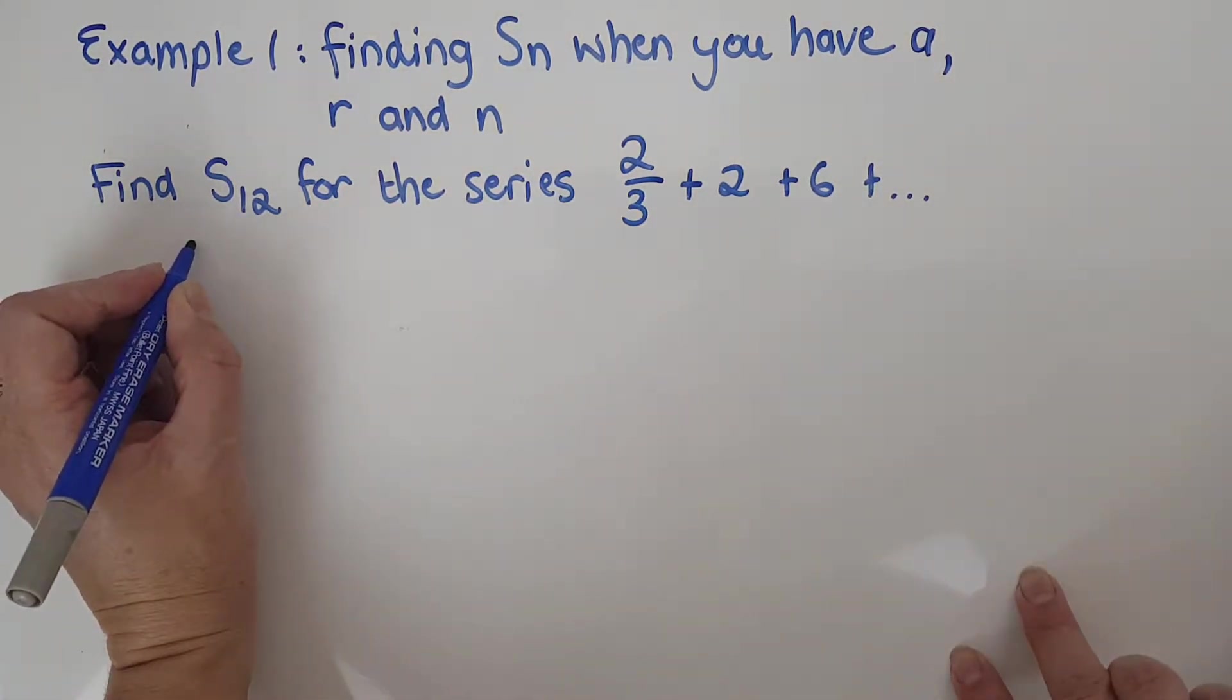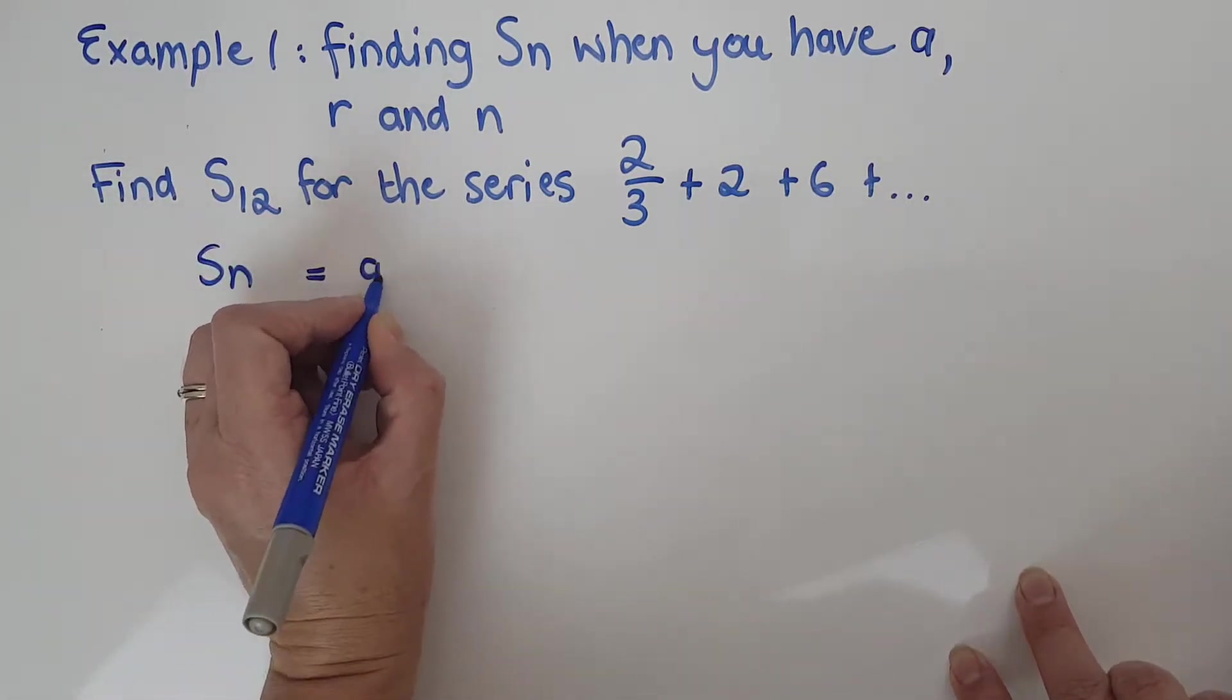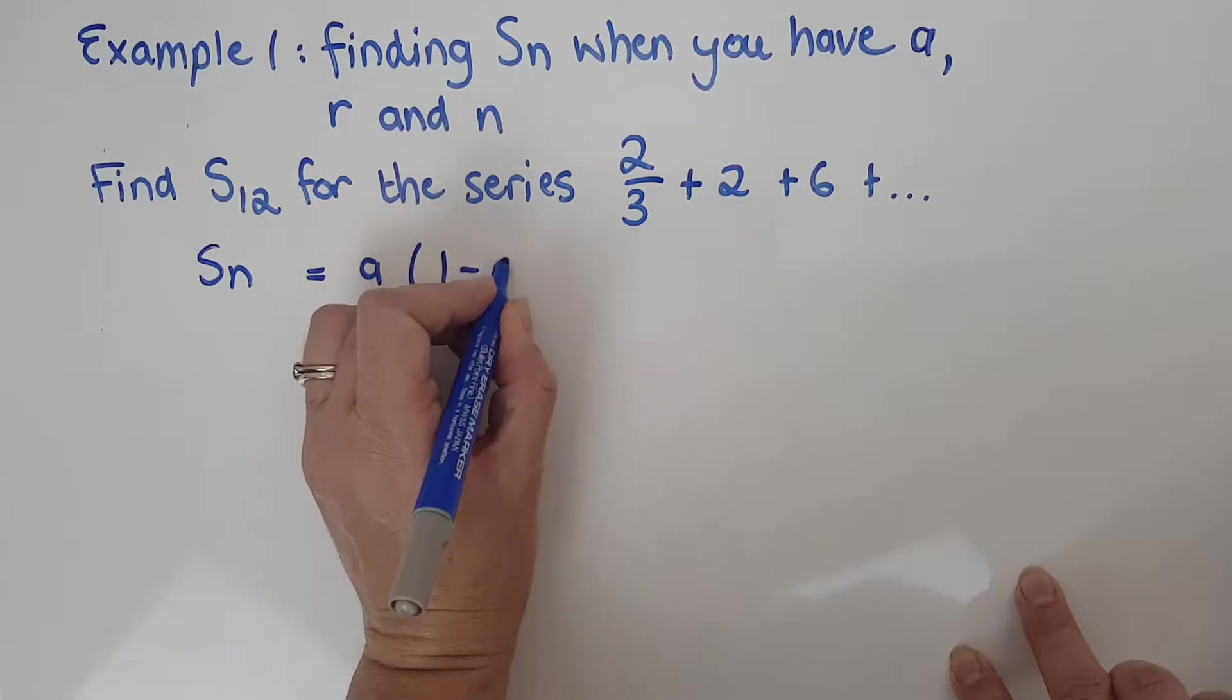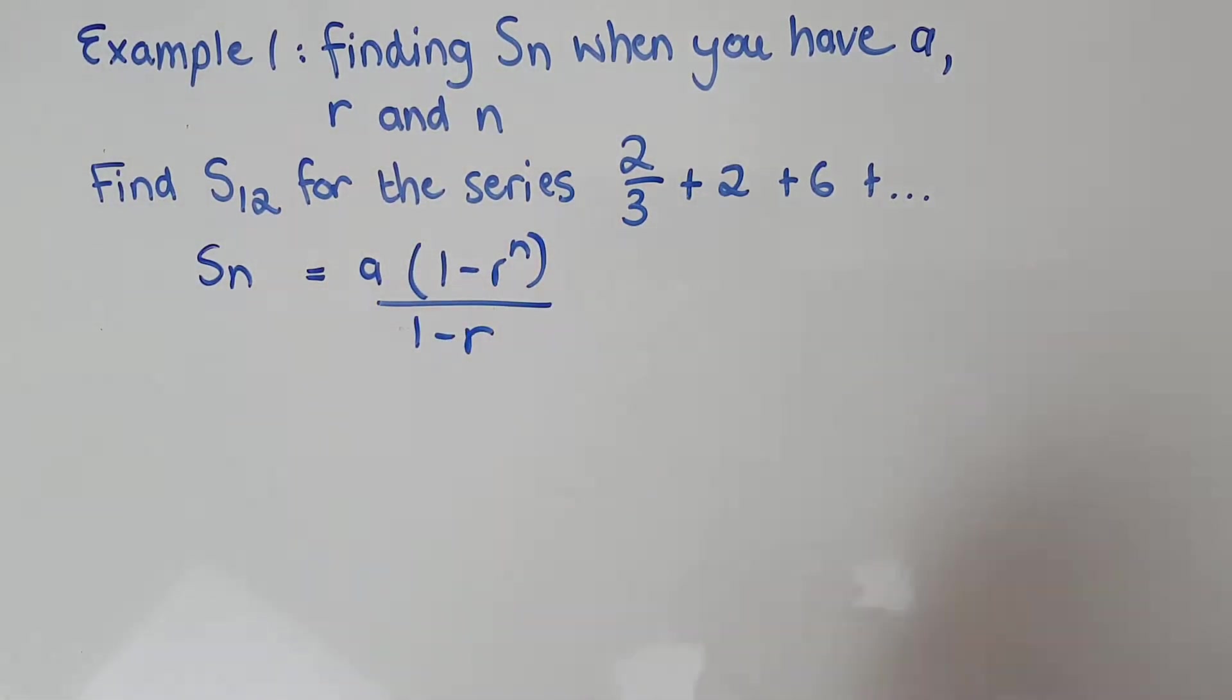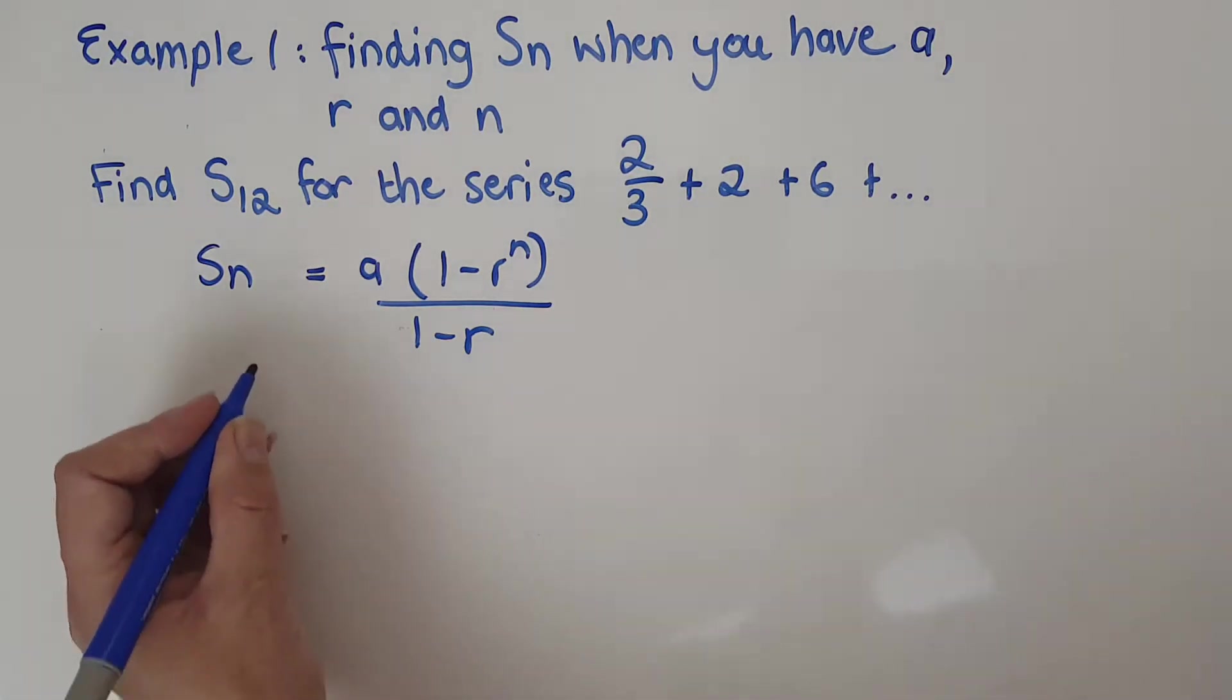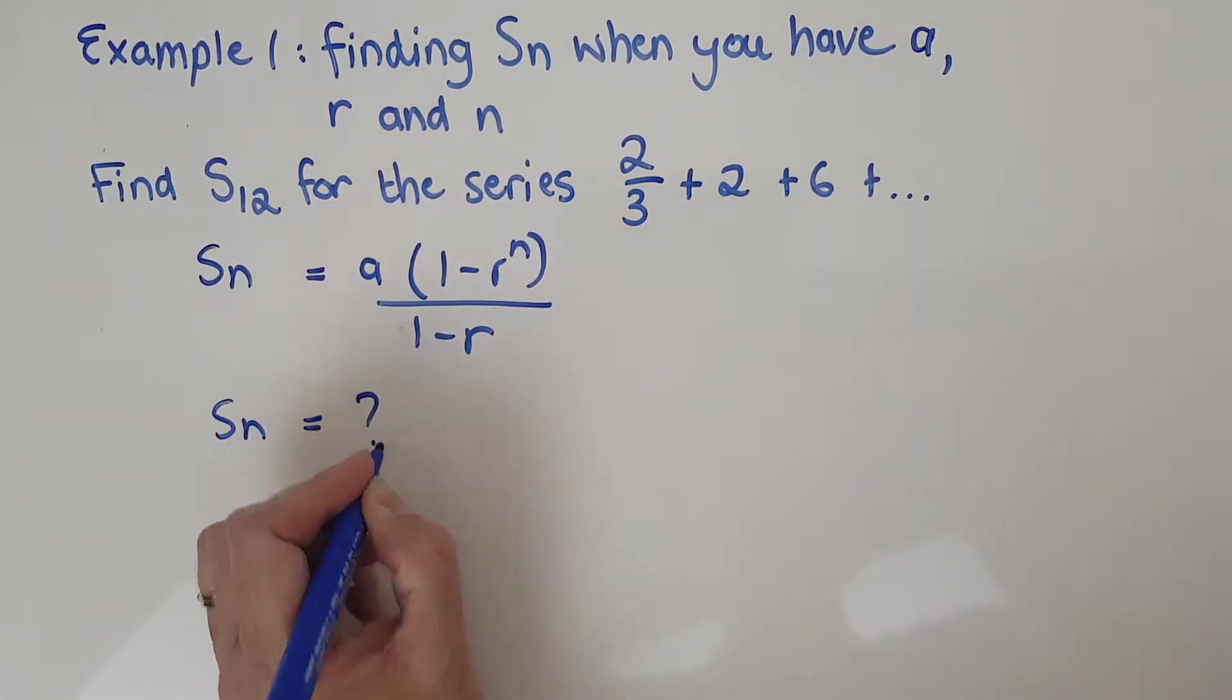So it's going to be writing the formula. Sn is going to be a, 1 minus r to the n, over 1 minus r. So let's just address what I've got there. I've got Sn equals, find S12, so I don't have the Sn, that's my question mark.